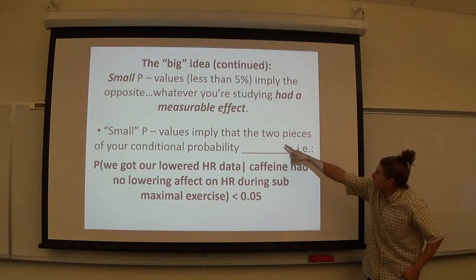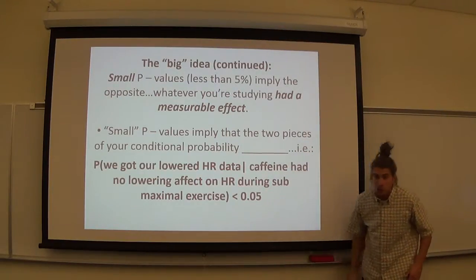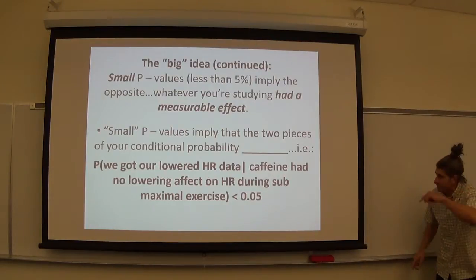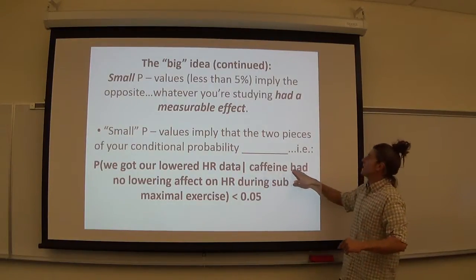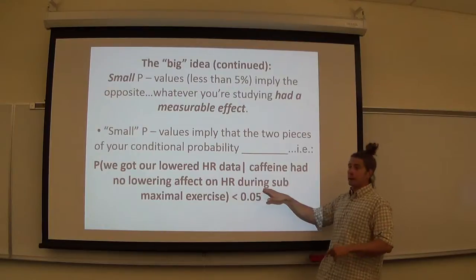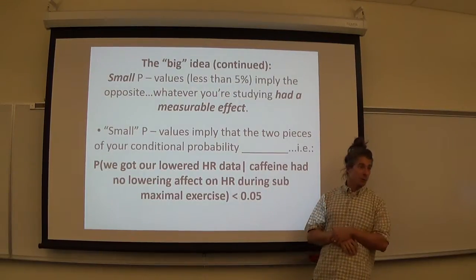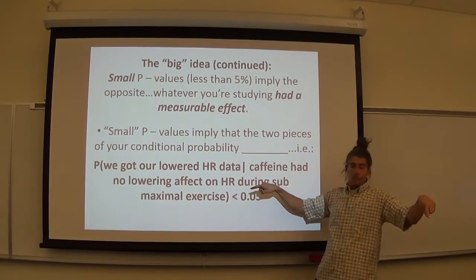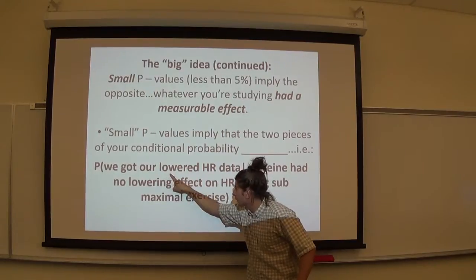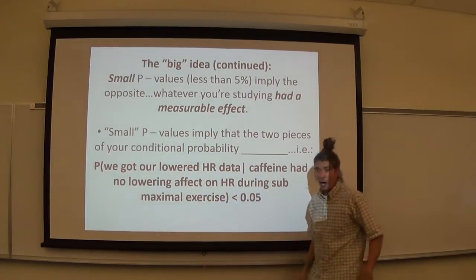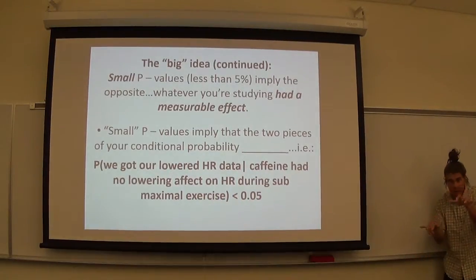Okay? Small P values apply to two pieces of the conditional probability. Let's look at this example. Caffeine has no lowering effect on heart rate during submax. That's what we're assuming, right? Build the curve around that. And then what did our data say? It lowered it, so what do the two hands do to each other?